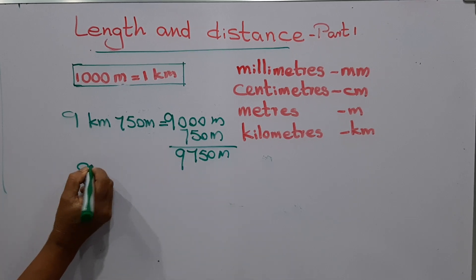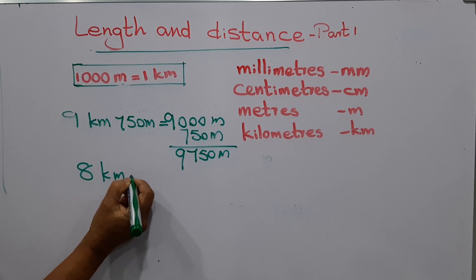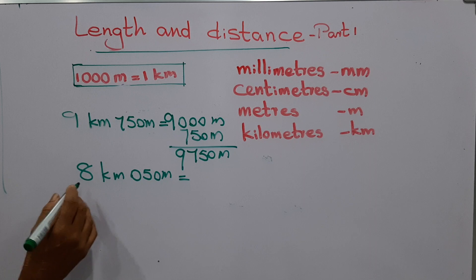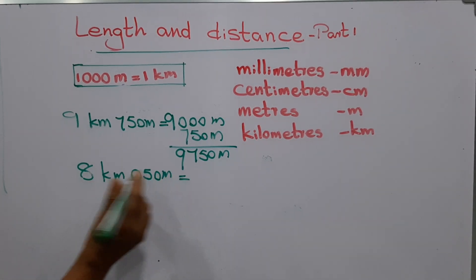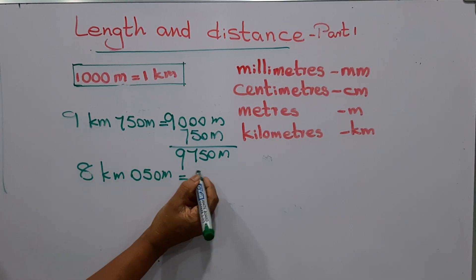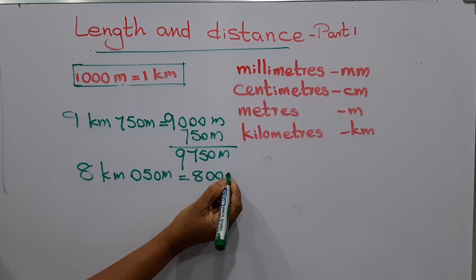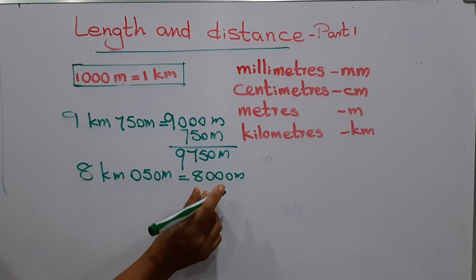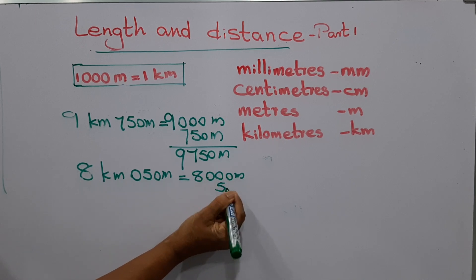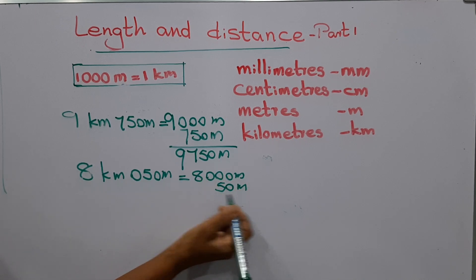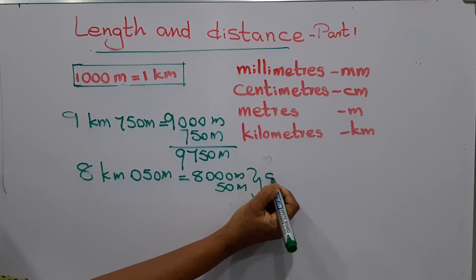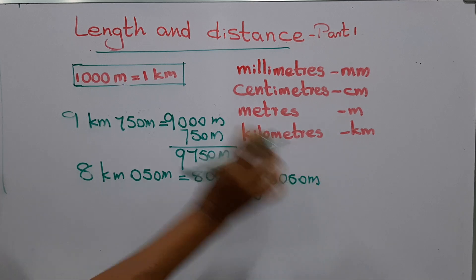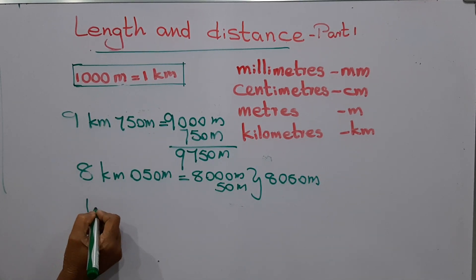We'll move to another one: eight kilometers and fifty meters. Eight kilometers means eight thousand meters, plus fifty meters added here. Total it gives eight thousand and fifty meters.